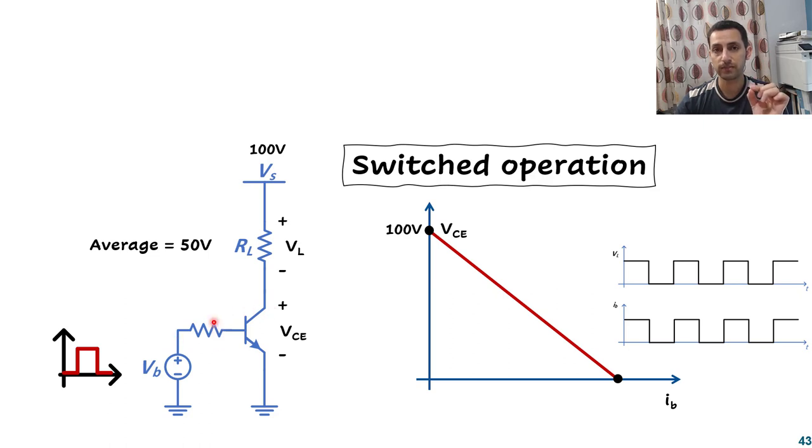Now my transistor, when I supply this pulsation, it will be 0 and 1, 0 and 5 volt, 0 and 10 volt. That means I cut it and saturate it, cut it and saturate it. In the cutoff region, my voltage across the transistor terminals will be 100 volt. And if I saturate it, it will be like a short circuit between the collector and emitter, and the voltage across the transistor will be 0. This is my load line or the linear region line, and I can really switch between these two regions.